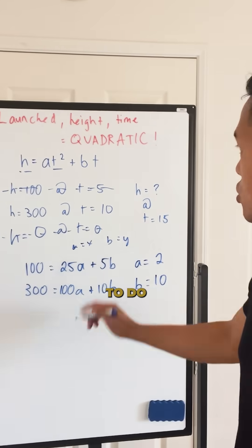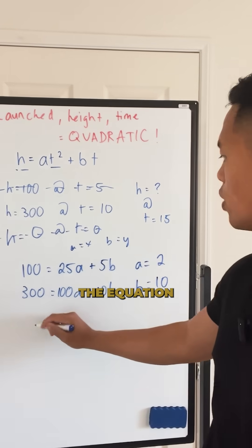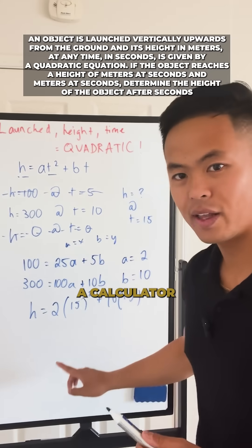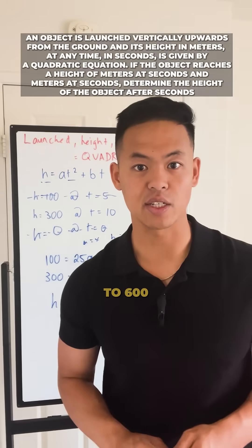All we need to do is plug A and B back into the equation, so H equals 2 times 15 squared plus 10 times 15. Once you put this into a calculator, you should get H equals 600.